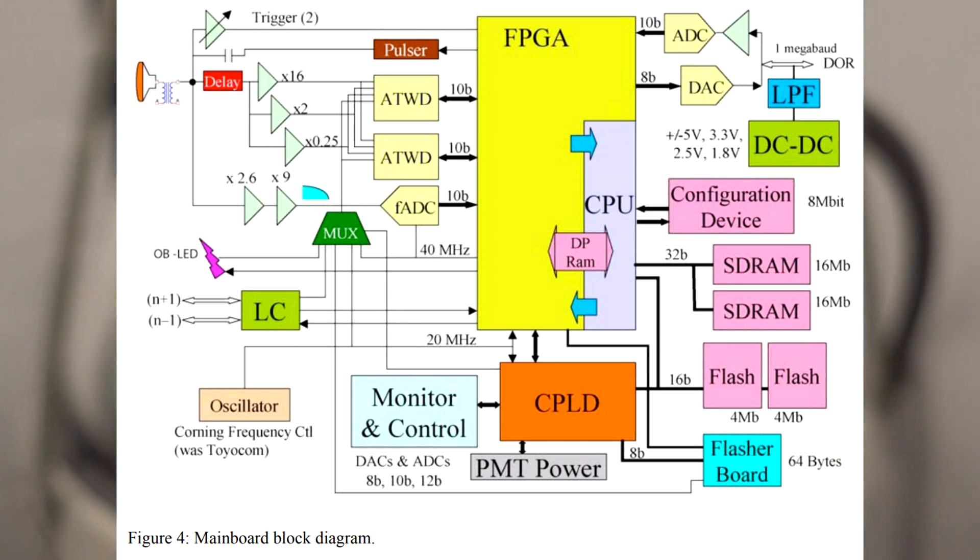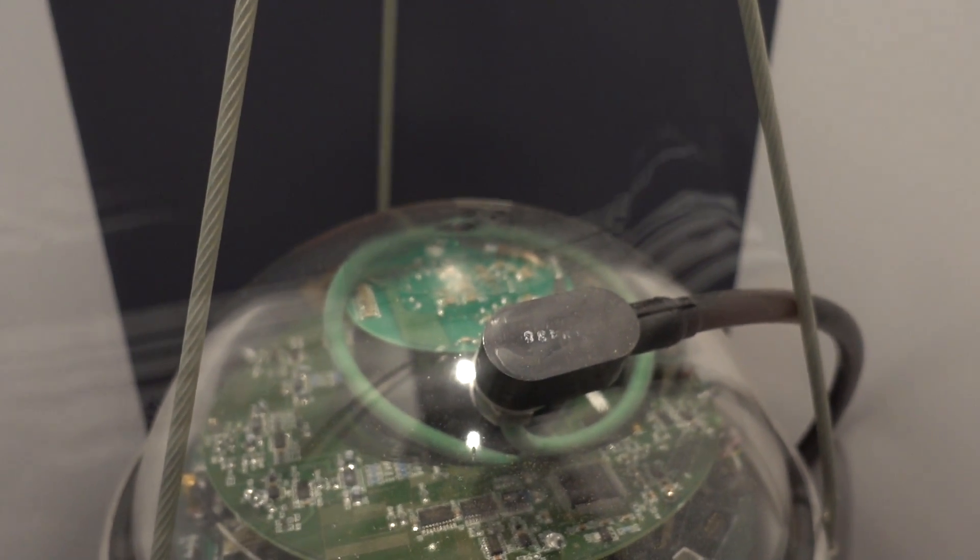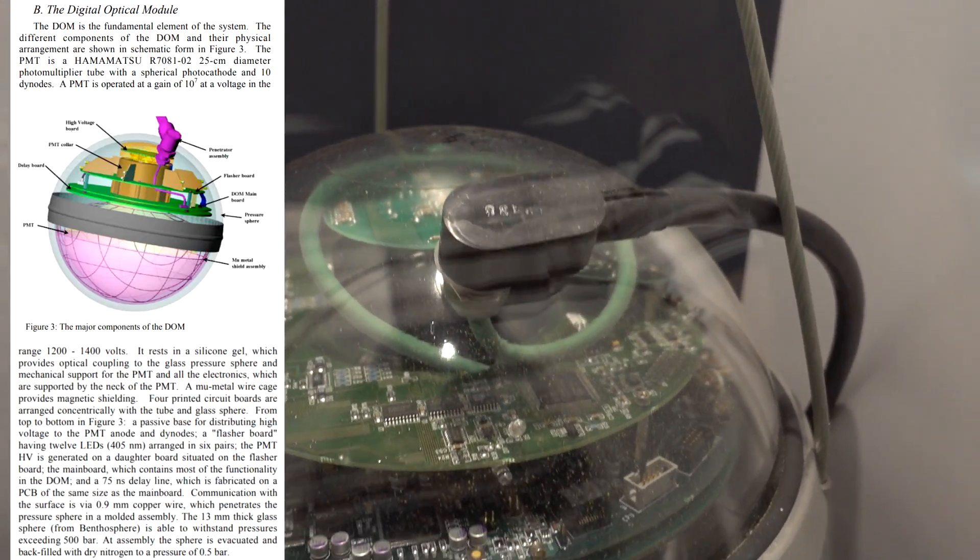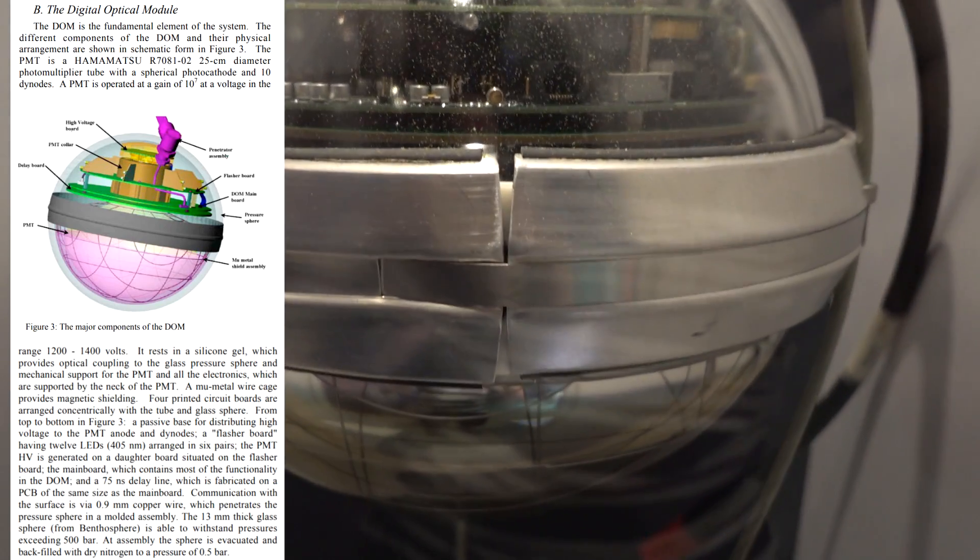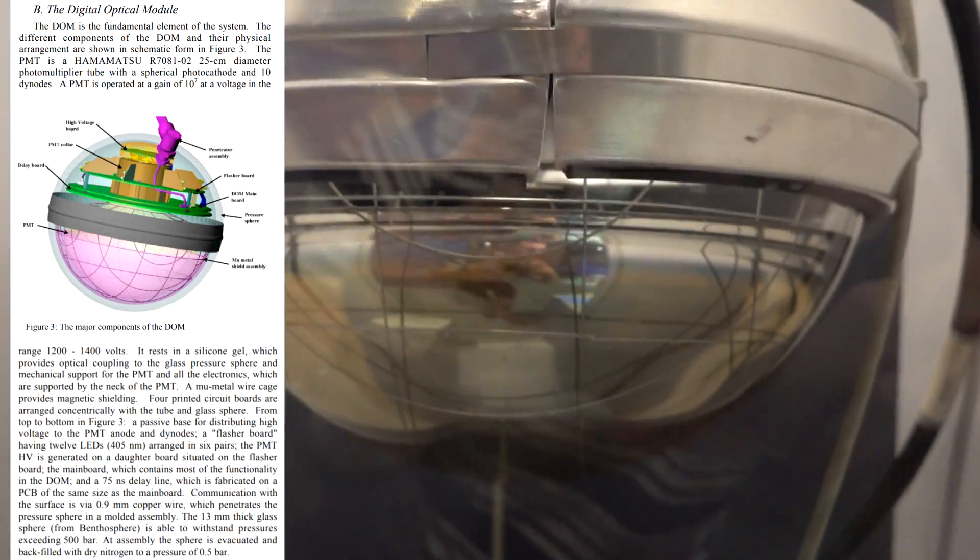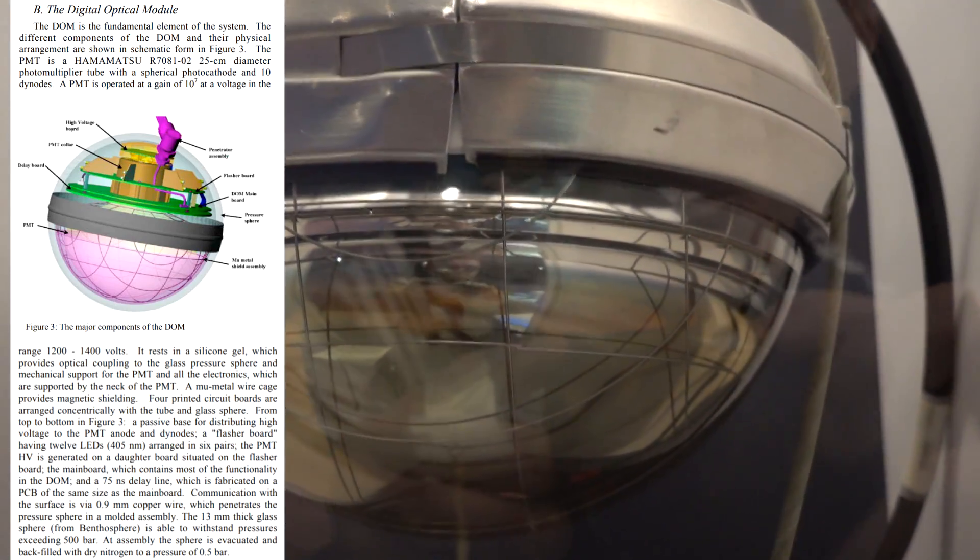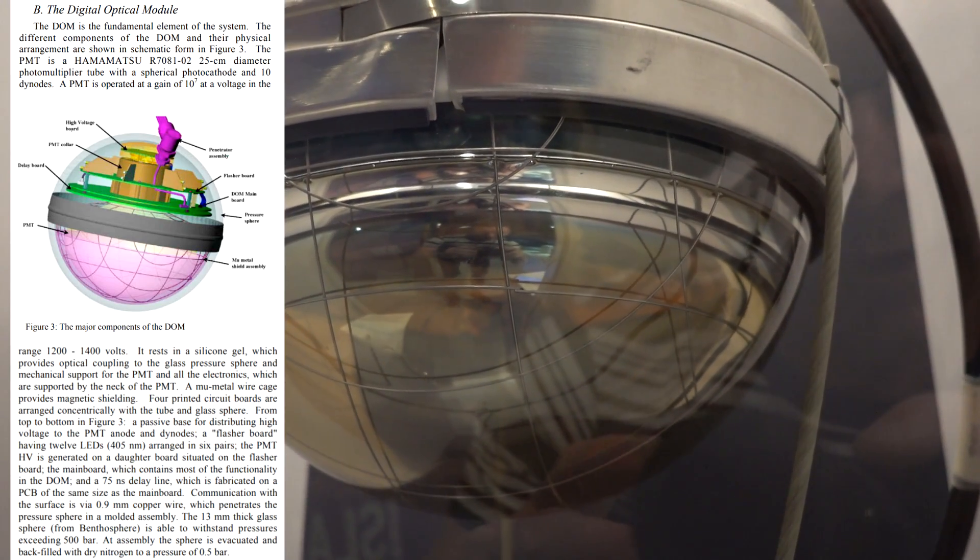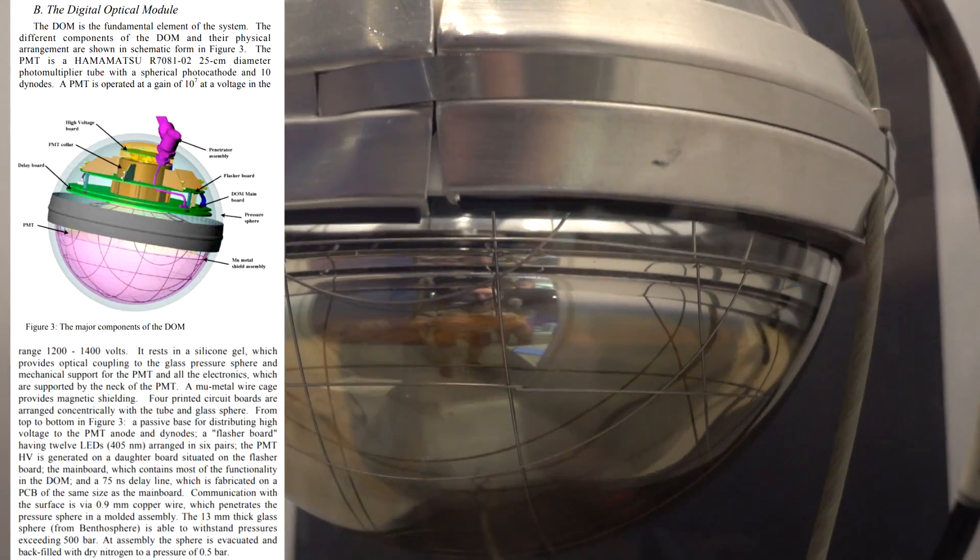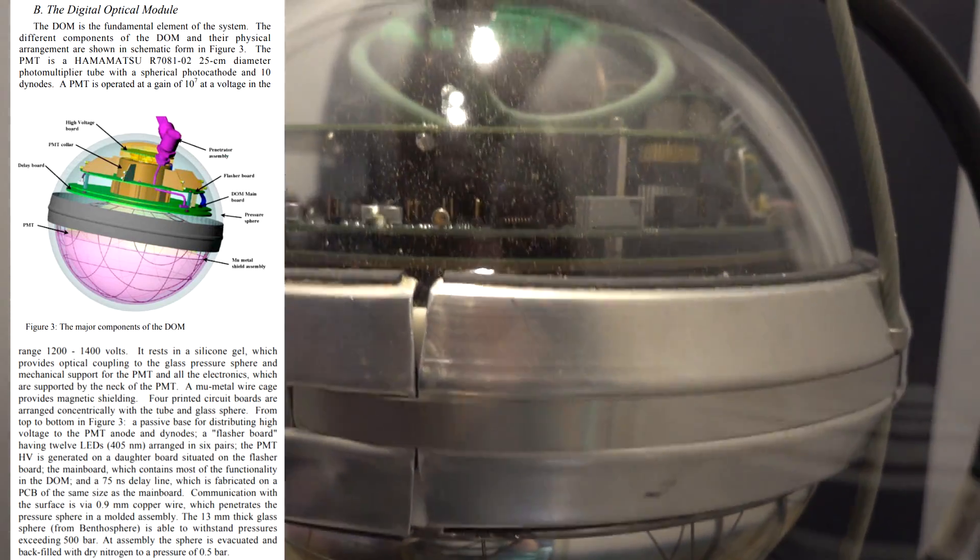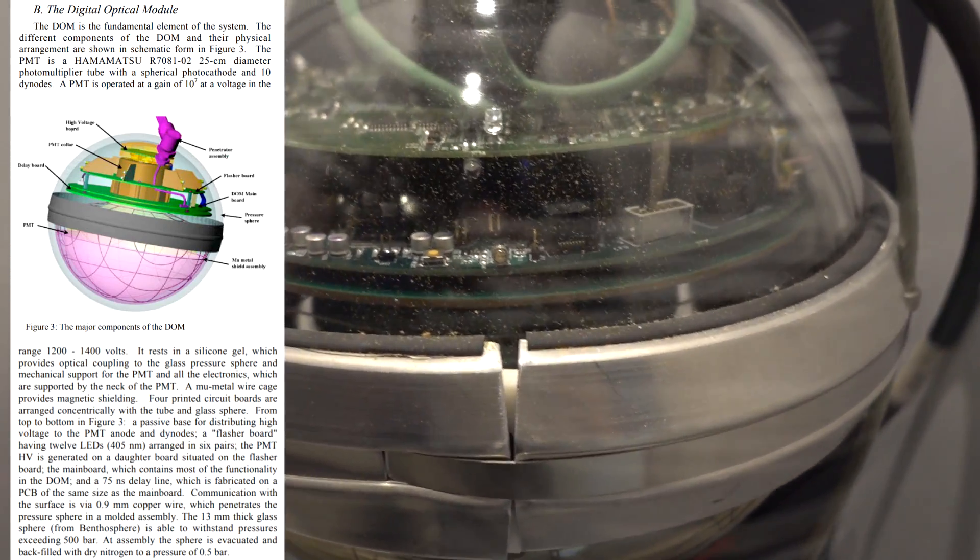It'll have a photomultiplier tube for detection and a high voltage board, probably up the top there, that would be what the green cable is there. The photomultiplier detects neutrinos, and it's got to have a wide dynamic range, so it's got to detect anywhere from one, up to thousands when there's a big event.